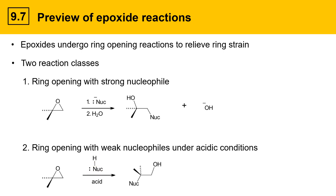You could think of this as analogous to an alcohol. These types of reactions under acid-catalyzed conditions will proceed with the nucleophile attacking the more substituted of the two carbons of the epoxide in the ring opening. The mechanisms for these reactions will be discussed in detail in subsequent videos.